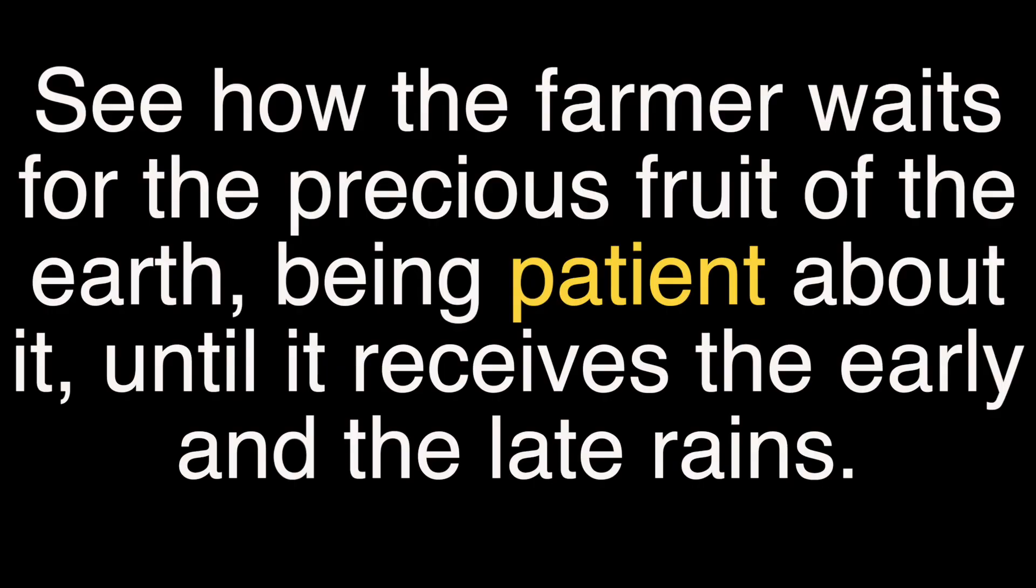To illustrate the type of patience we need James gives a picture of a farmer. See how the farmer waits for the precious fruit of the earth being patient about it until it receives the early and the late rains. We understand the importance of seasons when we go to the market and certain fruits are in season. You can't get any fruit you want all year round.